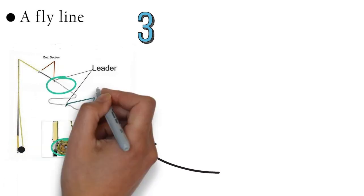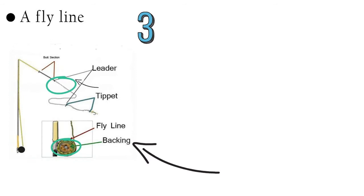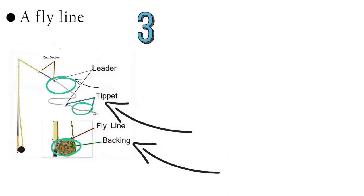Fly leader: this part connects to your fly backing. It starts the same thickness as your backing, then it gets thinner and harder for the fish to see. The tippet is the last part of the fly line and is almost impossible for the fish to see. The tippet connects to the fly.